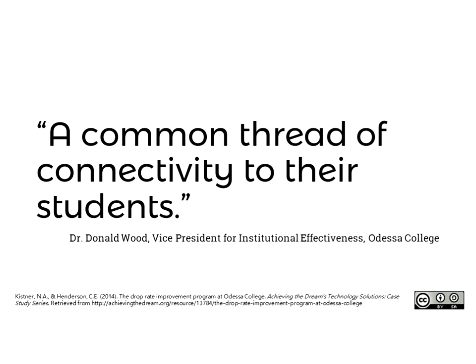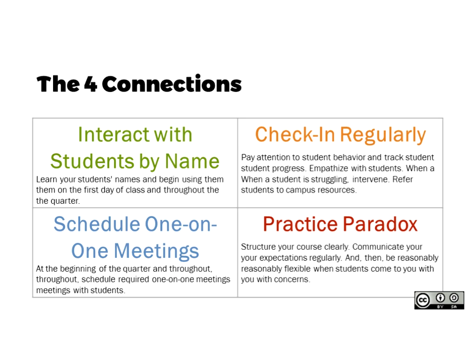The four connections are the four things Don found that faculty members who intentionally built connection with their students did consistently. If you'd like to open the handout Alyssa shared, you can follow along. The first is that they interact with students by name — they learn their students' names within the first week and use them throughout the quarter, in emails, in the LMS, and in comments. The second is that they check in with their students regularly. As our VP Elliot Stern says, 'be your own early alert system.'